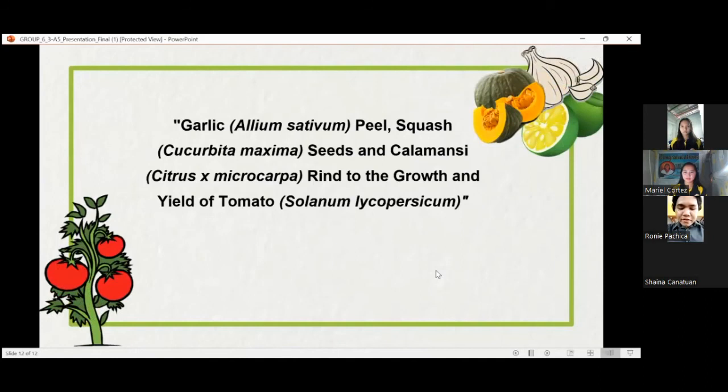Thank you, everyone. My name is Ronnie P. Pachica. I'm Shaina Panatuan. And I'm Marielle Cortez. Our research study titled is Garlic Allium Sativum Peel, Squash Cucurbita Maxima Seeds, and Calamansi Citrus X Microcarpa Rind to the Growth and Yield of Tomatoes Solanum Lycopersicum. That's all. Thank you.